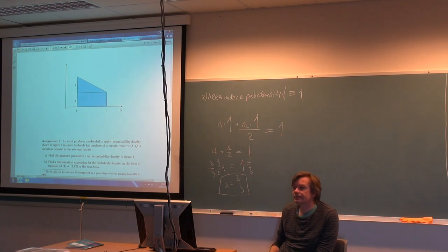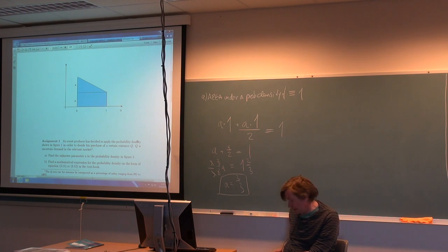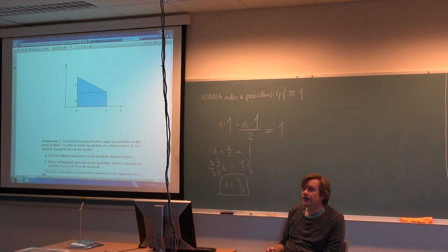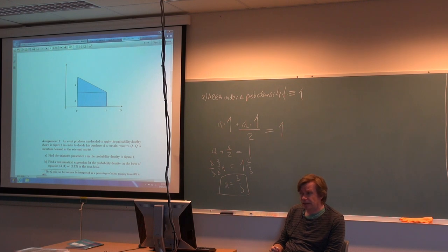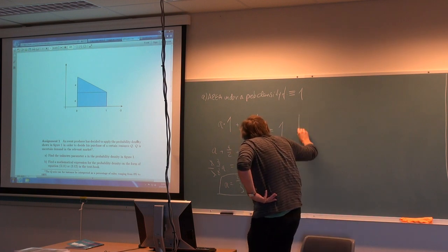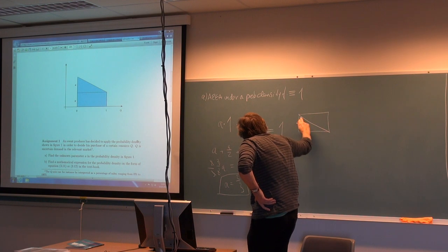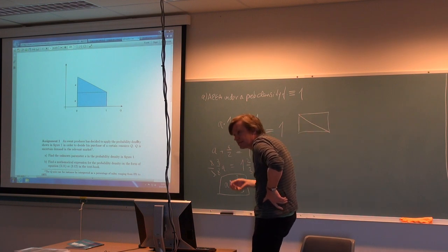To solve this exercise you need to know that the area under a probability density function should equal one — that's the key piece of information. Then you need to know the area of a rectangle and the area of a triangle. If you know the area of a rectangle, it's easy to find the area of a triangle: just draw a line and divide the total area by two. That's straightforward in principle.